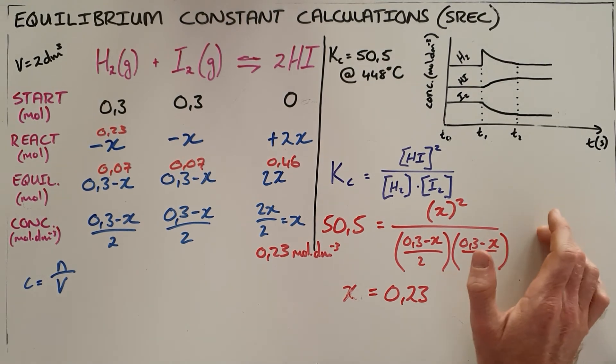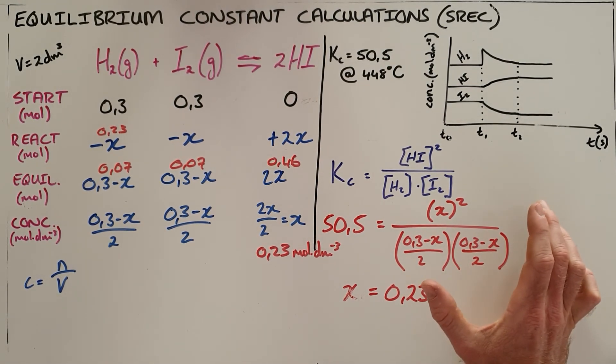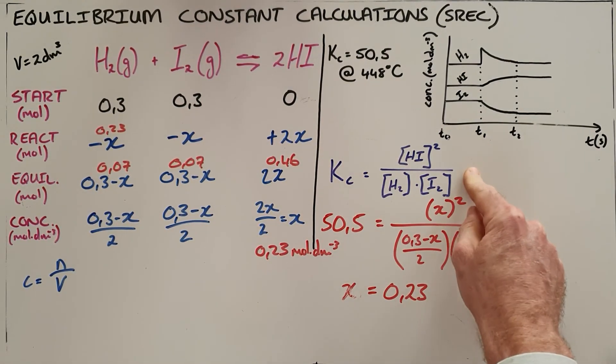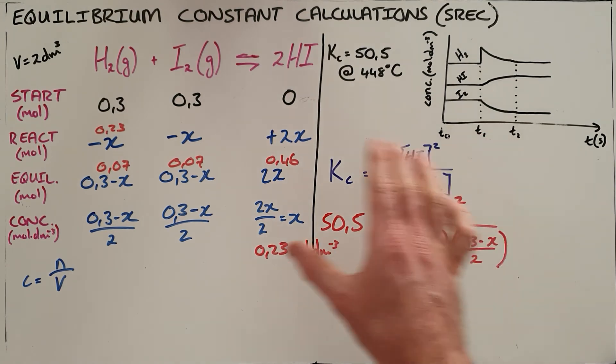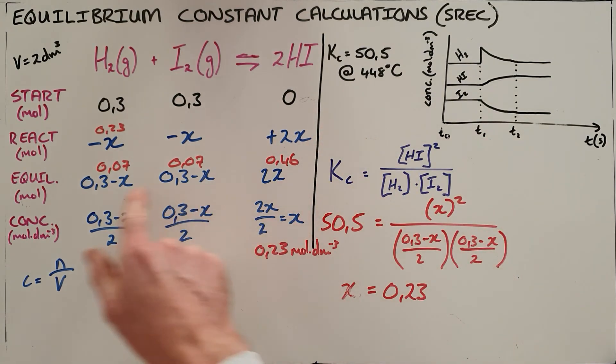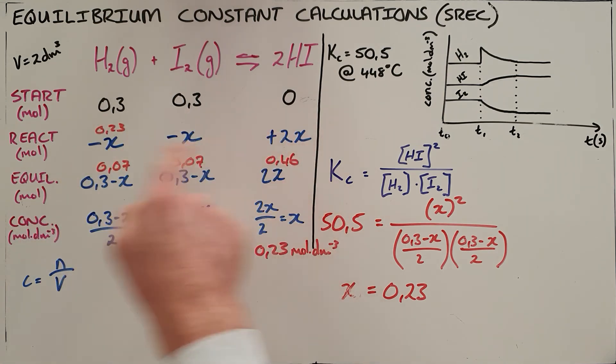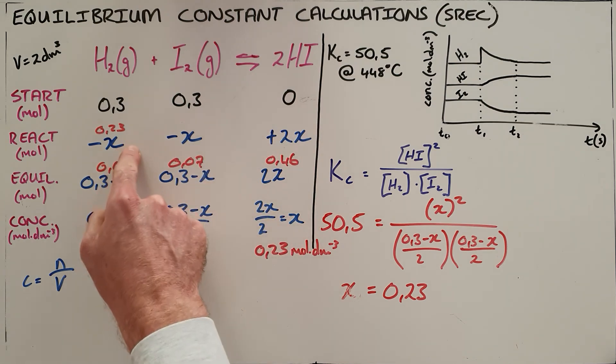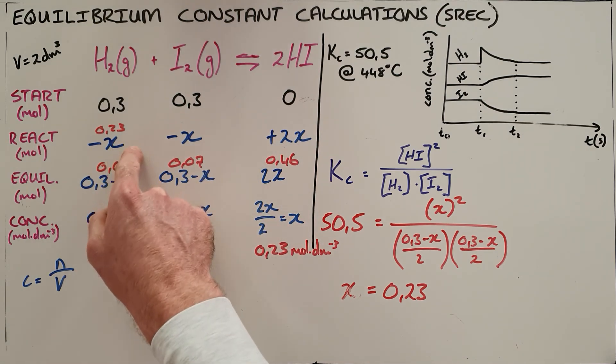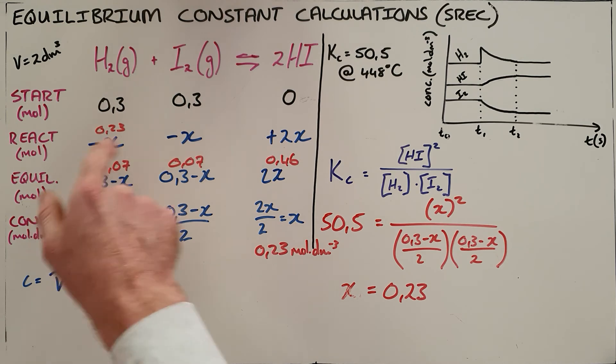It's important to understand what the equilibrium constant means. Once equilibrium is established, those values were established through the reaction. Since we were not given complete information, we introduced a variable X. For the reactants, we lose an amount X—negative X on each side.